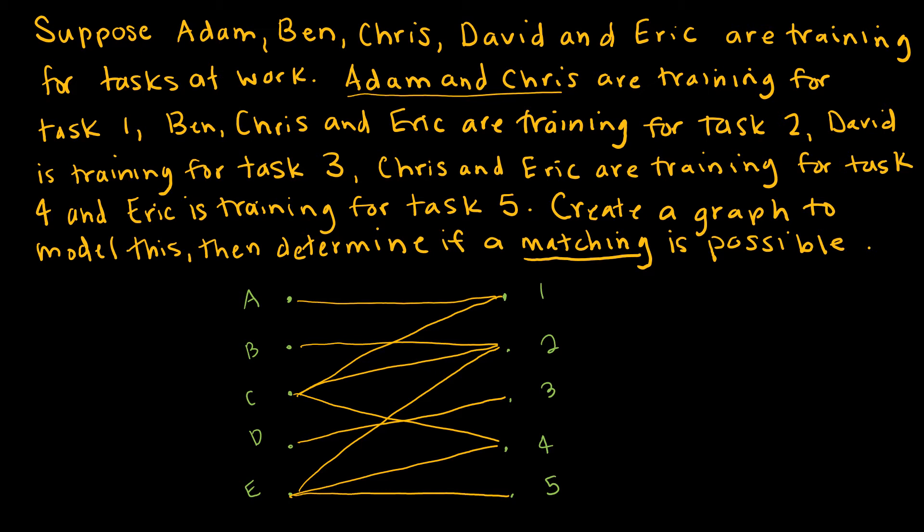So let's switch up colors. And I would start by looking at the singletons because there's only one person who knows how to do task 3, and so David gets task 3. And there's only one person who knows how to do task 5, and so Eric is going to do task 5.